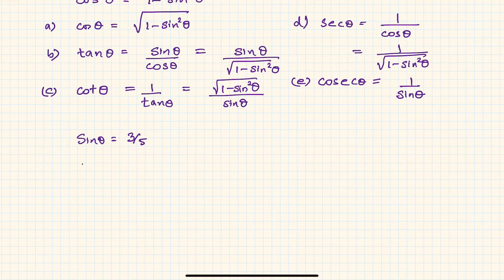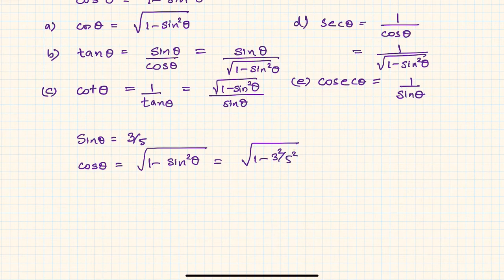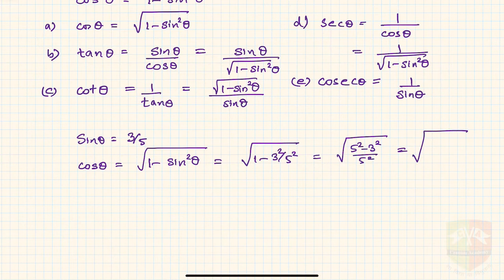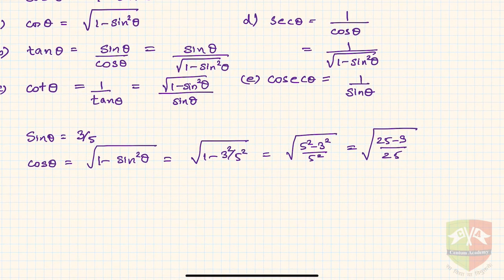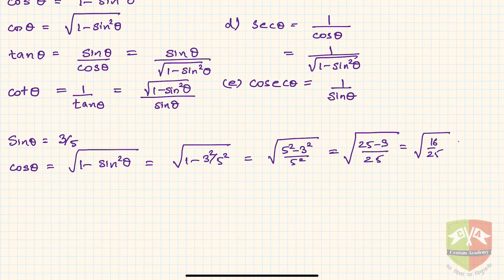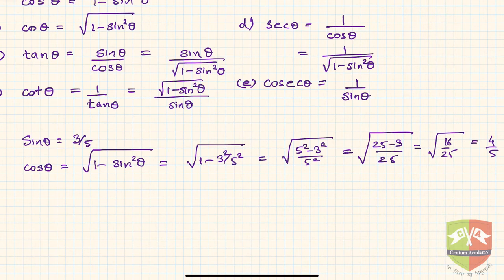Then what will be cos theta? Cos theta will be the square root of 1 minus sin squared theta, which is the square root of 1 minus 3 squared by 5 squared, which is the square root of 5 squared minus 3 squared by 5 squared, which is the square root of 25 minus 9 by 25, equal to the square root of 16 by 25, which is 4 by 5. We take the positive square root, so cos theta equals 4 by 5.